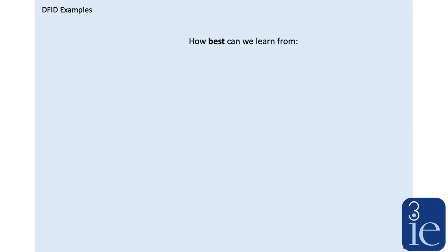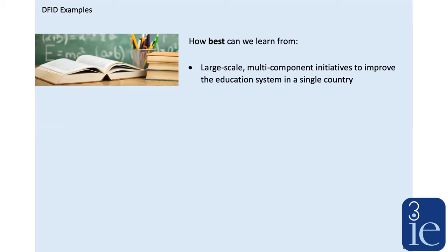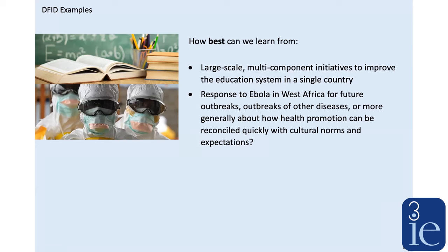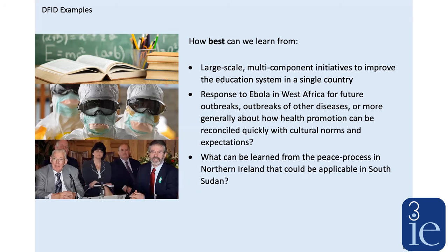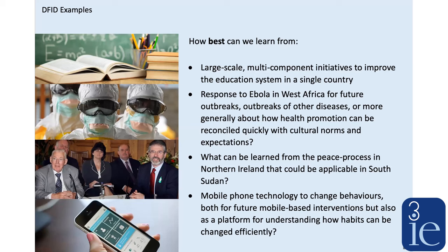DFID gave us examples of the types of things where it's quite difficult to learn with current methods: how do we best learn from large-scale multi-component initiatives to improve education systems in a country? How do we learn from the response to Ebola in West Africa for future outbreaks — we're currently going through one, for example — or how health promotion can be reconciled with cultural norms? What can we learn from a peace process such as Northern Ireland that could be applicable in South Sudan, or perhaps in modern Ireland facing Brexit? And what can we learn about mobile phone technologies used to change behaviours, both for future interventions and for understanding how habits can be changed efficiently?